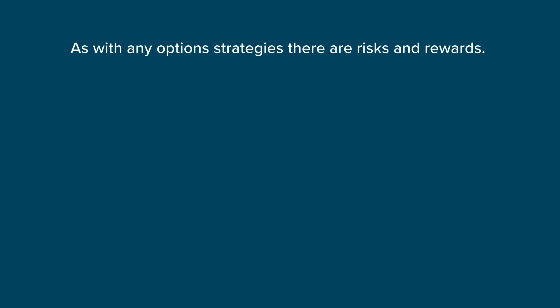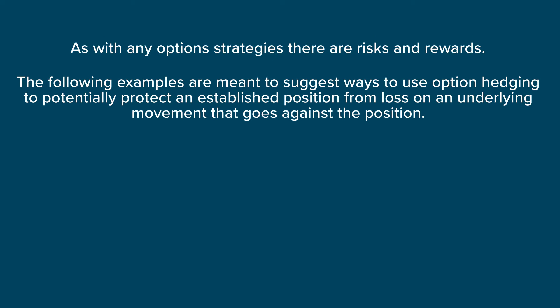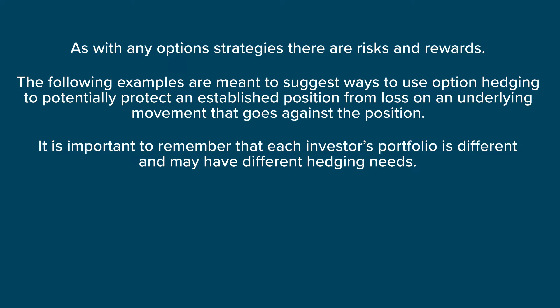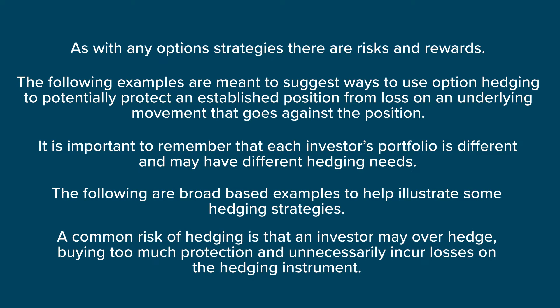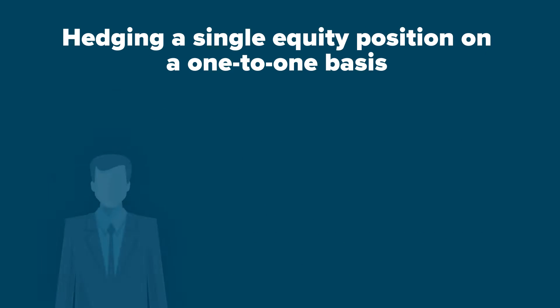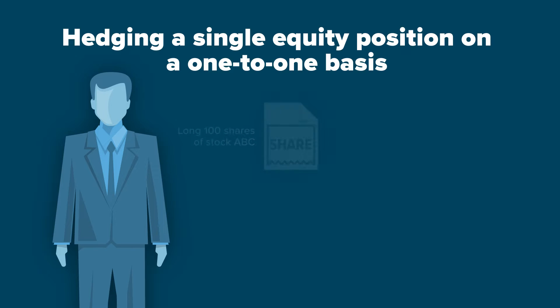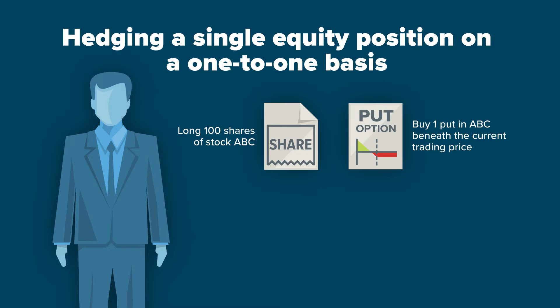As with any option strategies, there are risks and rewards. The following examples are meant to suggest ways to use option hedging to potentially protect an established position from loss on an underlying movement that goes against the position. It is important to remember that each investor's portfolio is different and may have different hedging needs. The following are broad-based examples to help illustrate some hedging strategies. A common risk of hedging is that an investor may over-hedge, buying too much protection and unnecessarily incur losses on the hedging instrument.